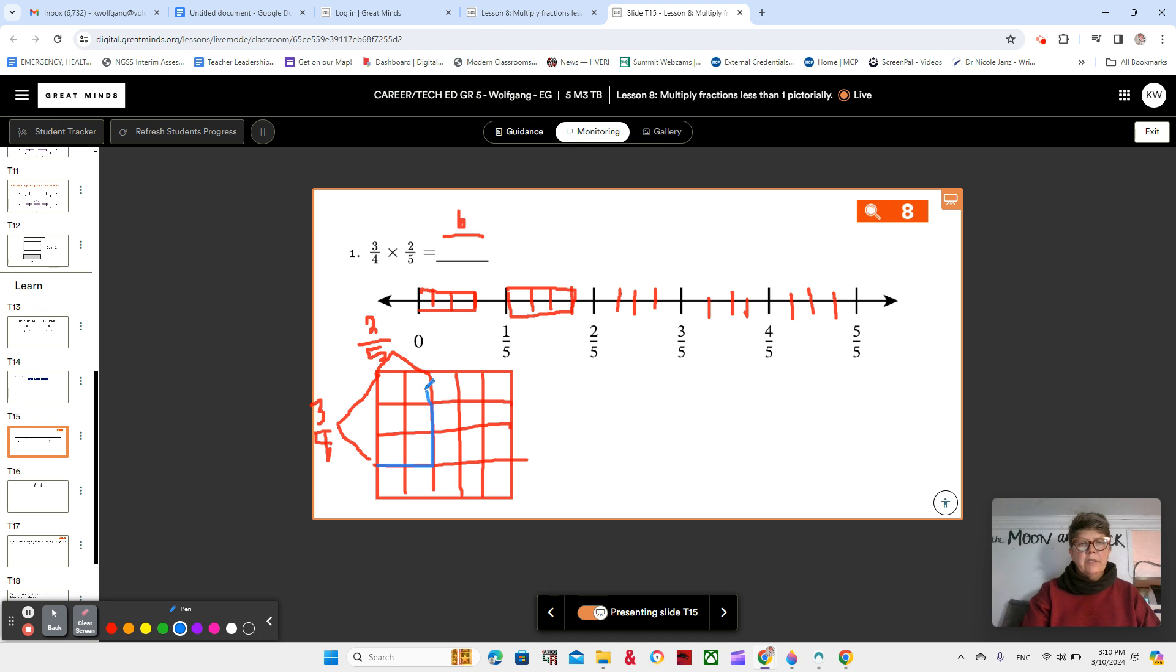And you can see that my overlap of the two fifths and the three fourths is going to be this section here, which is six, but six out of a total of 20. So pay close attention to that. We're taking it out of the whole. We're not stopping at our fraction.